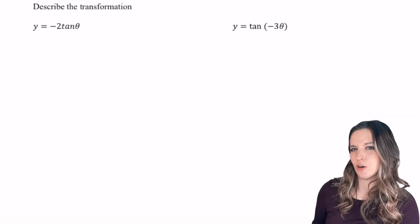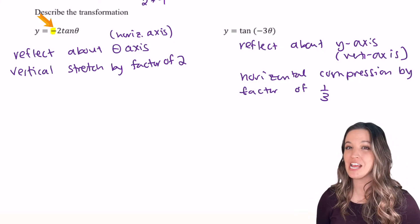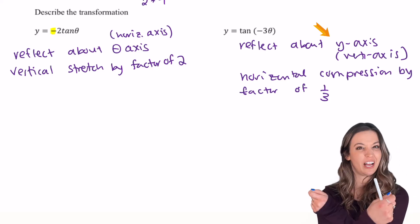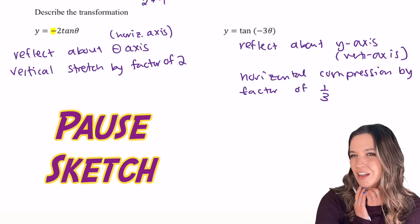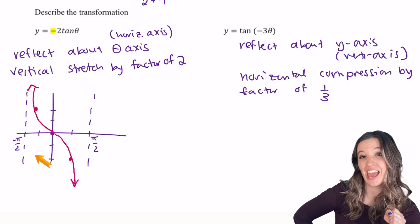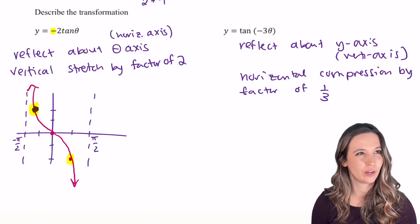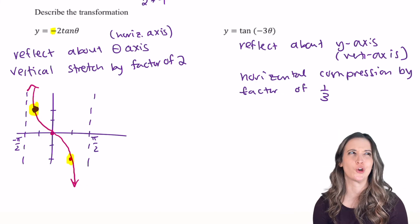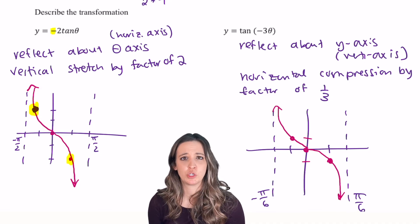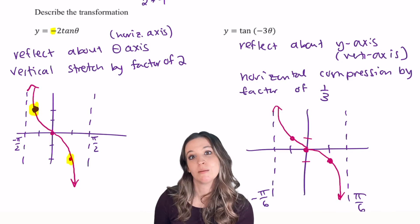We're really getting the hang of tangent. Pause and describe the transformations on these next two. Did you remember the negative outside the function is a reflection over the horizontal axis? The negative inside the function is a reflection over the vertical axis. Instead of starting at the negative a value, I start up at the positive a value — so I go concave up first and then concave down. Reflecting over the vertical axis looks the same as reflecting over the horizontal axis, meaning it's symmetric about the origin. That means it's an odd function.